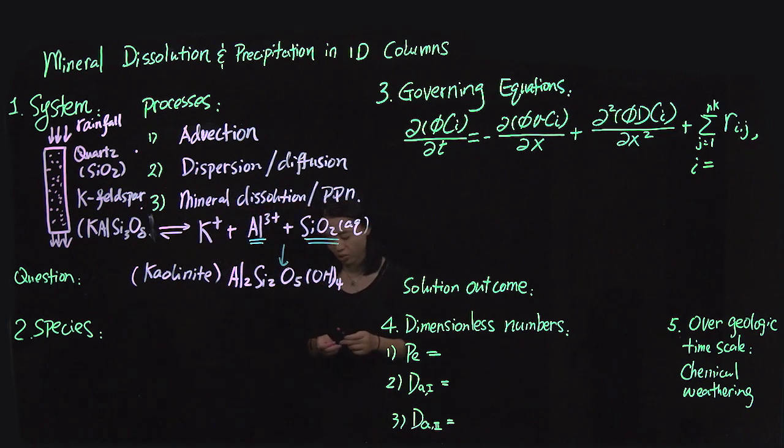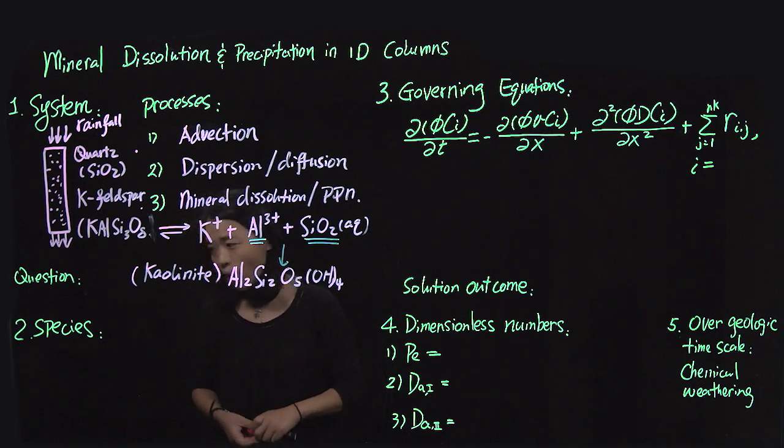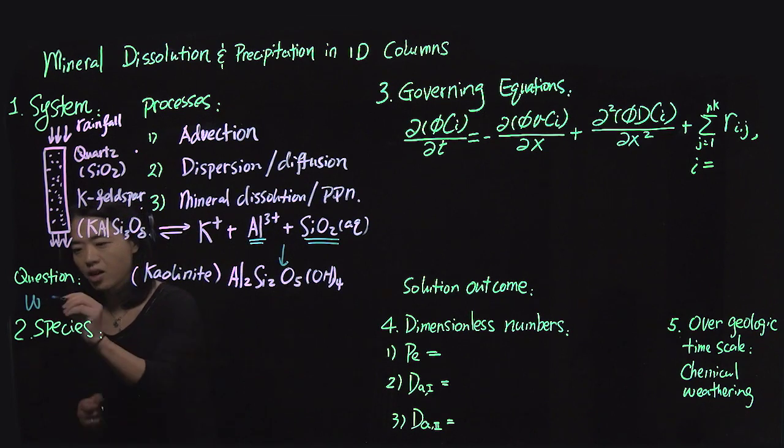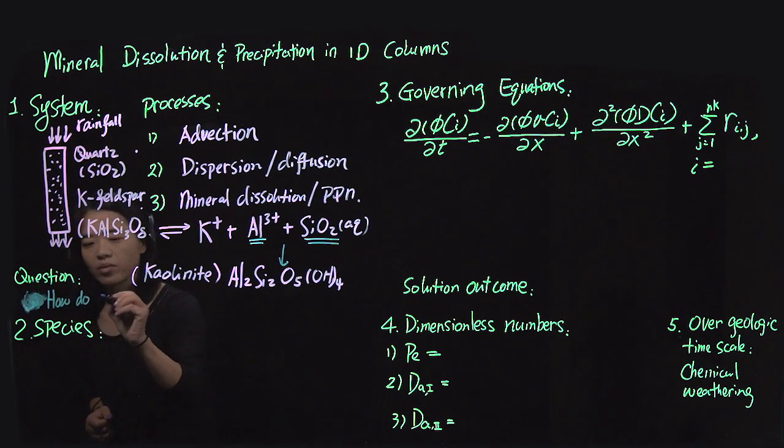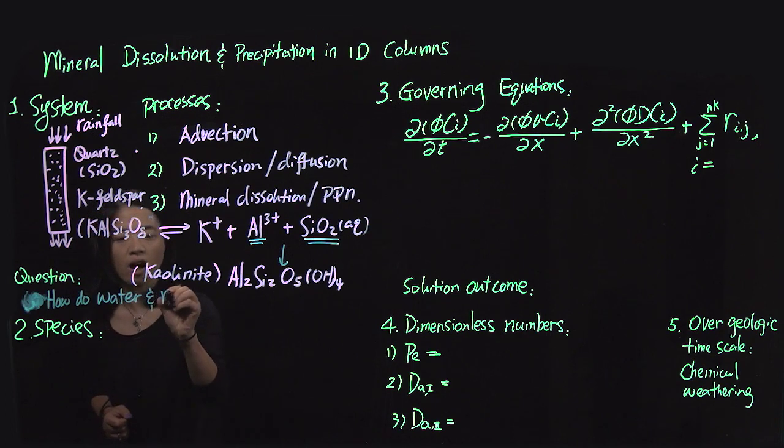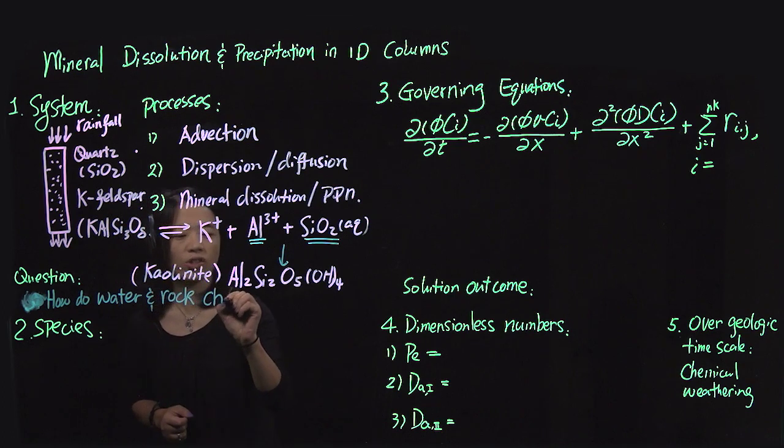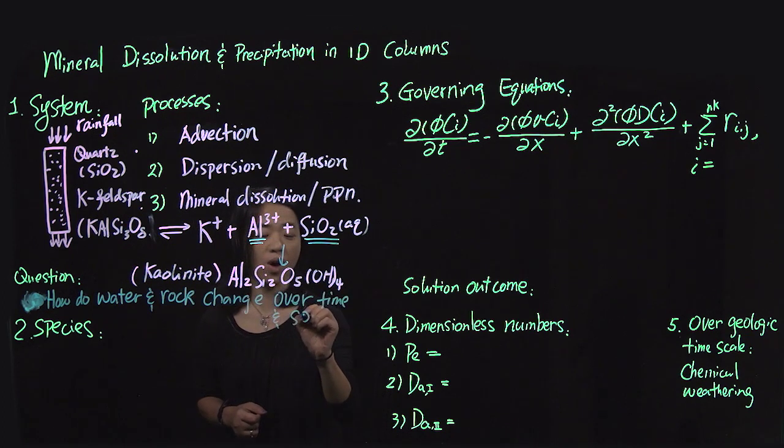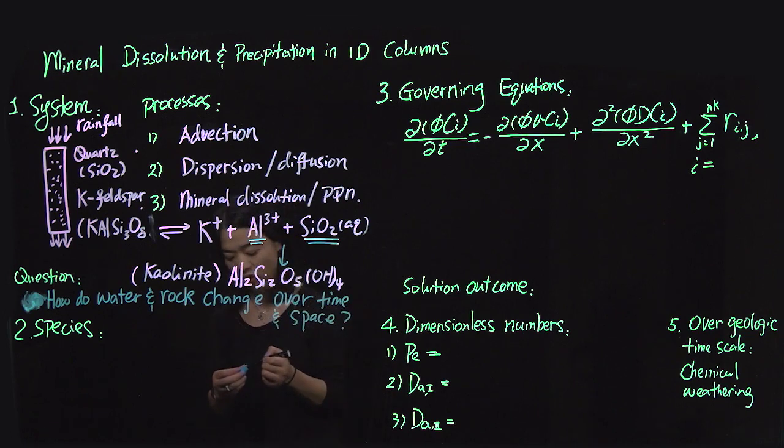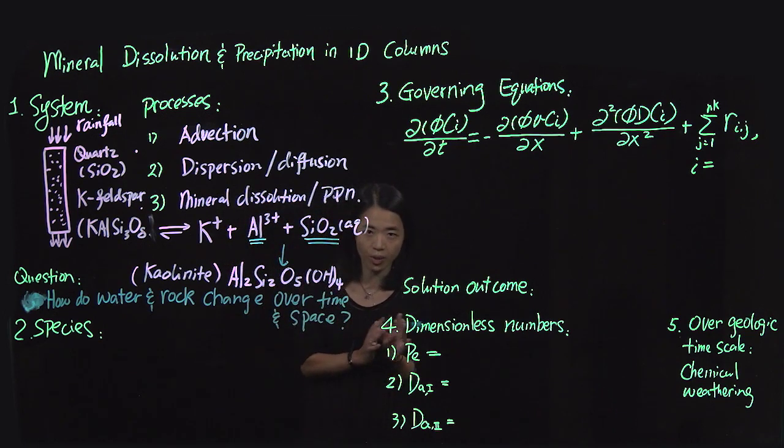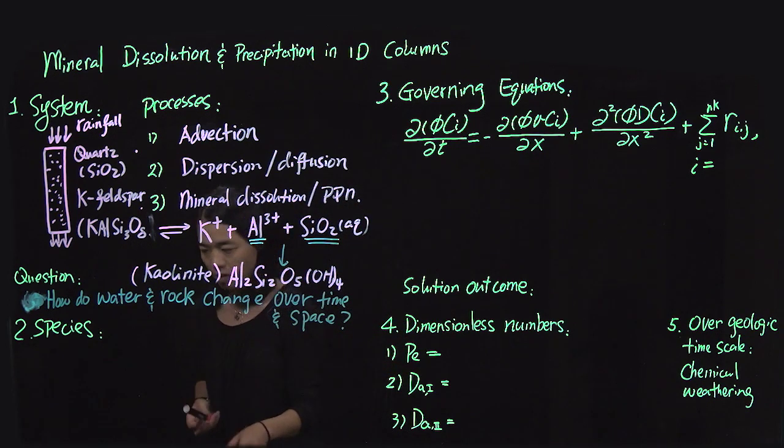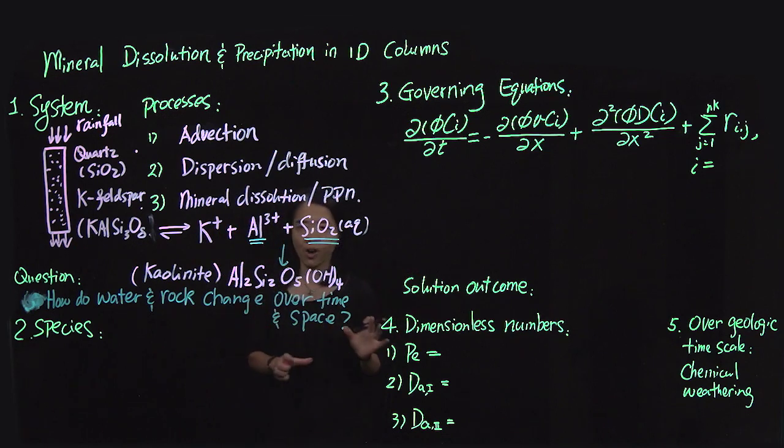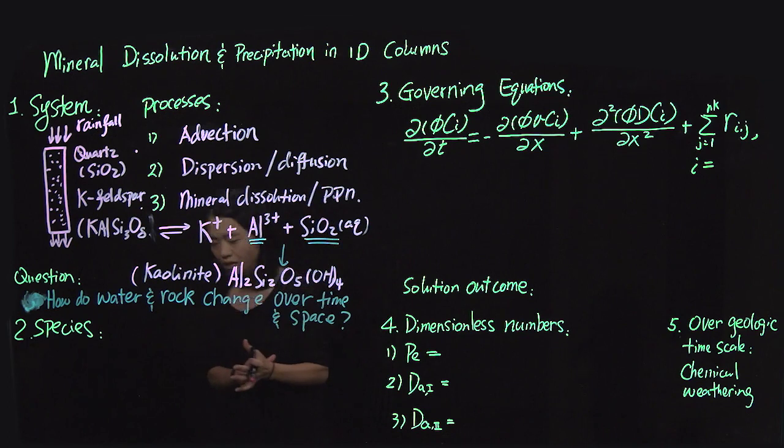So there is a change in physical property as well. So one question we often ask is how does this water and rock change over time and also over space? We want to know how fast things change and how much they change and what they have become. And a lot of times we want to be able to predict that. So in order to do that we have to set up the equations, reactions, and all of that, putting everything together and think about how we solve them.